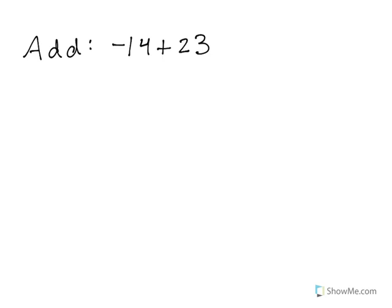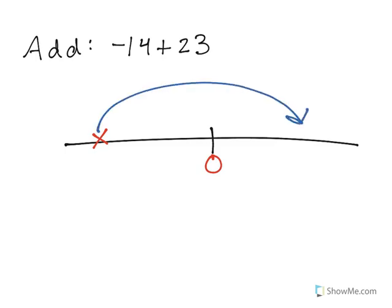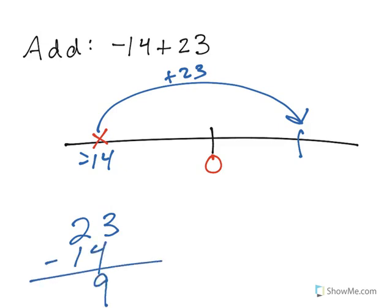Now let's add negative 14 plus 23. So sometimes for me, it just helps to visualize a number line. So I think, okay, negative 14 starts on the left. Negative 14. And then I'm going to add 23. So if this is negative 14, and then I move 23 spaces over here, where do I end up? Well, if I take 23 minus 14, the difference is 9. So that means from negative 14 to 0 is 14 spaces. And then from 0 to here is 9 spaces, because that together gives me 23. So negative 14 plus 23 is 9.